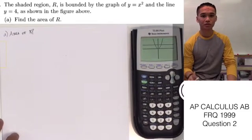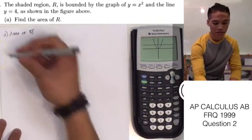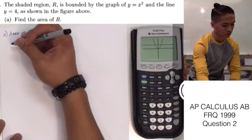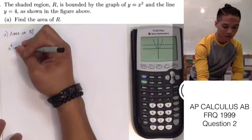The first thing that we need to do is find our points of intersection for our integral upper and lower limits. To find the intersection points, we just equate the two functions: x squared and 4.